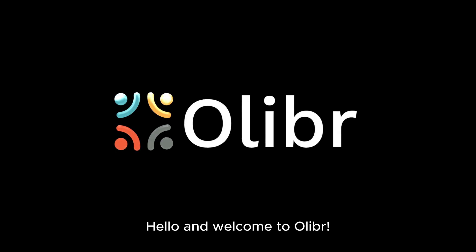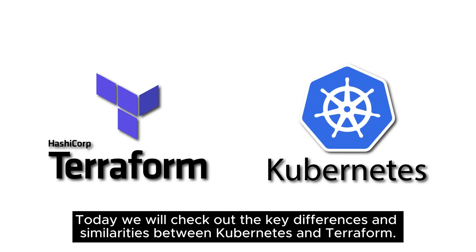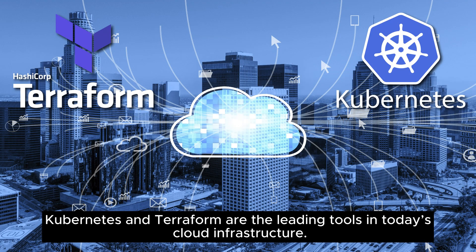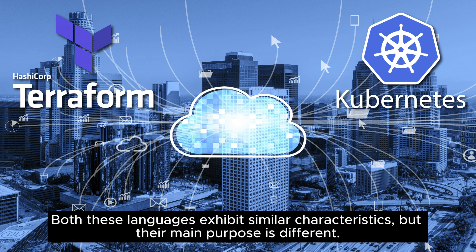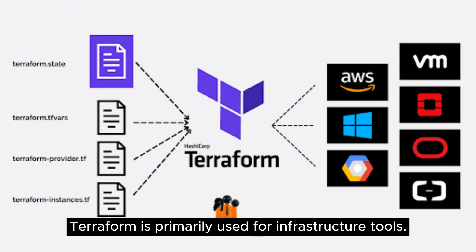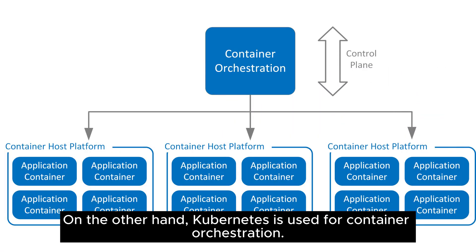Hello and welcome to Oliver. Today we will check out the key differences and similarities between Kubernetes and Terraform. Kubernetes and Terraform are the leading tools in today's cloud infrastructure. Both these tools exhibit similar characteristics, but their main purpose is different. Terraform is primarily used for infrastructure provisioning. On the other hand, Kubernetes is used for container orchestration.